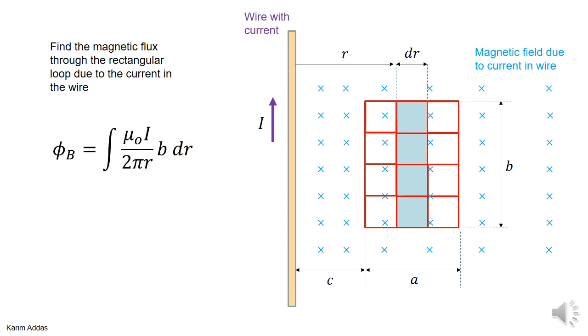Now, what are the constants and what are the variables? μ₀, I, b, 2π—they go out, and you're left with integration of dr over r. Now, where do you integrate from? The first one of these rectangular elements of area is this one.